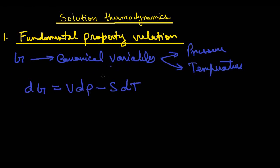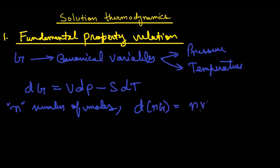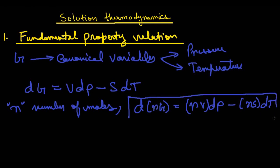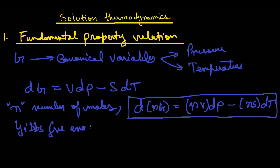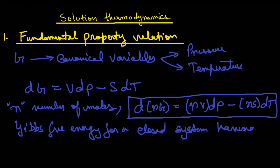Now, for n number of moles, if my system has n number of moles, I can rewrite this equation as d(nG) = nV·dP minus nS·dT. This is my new equation, and this equation is the Gibbs free energy for a closed system having n number of moles.